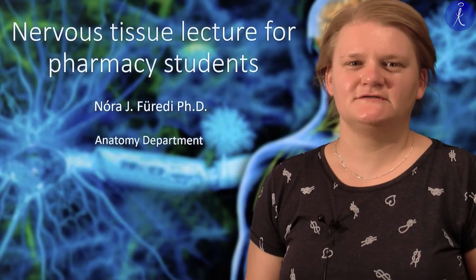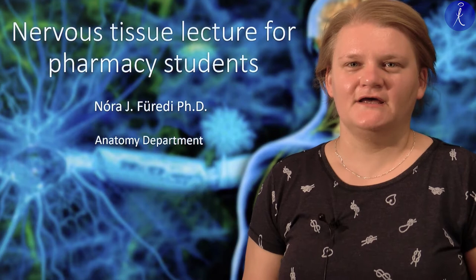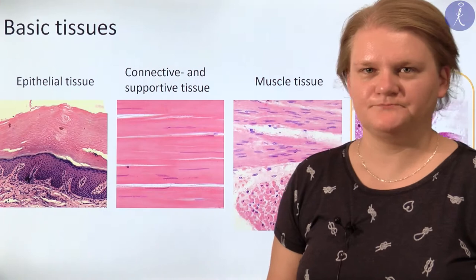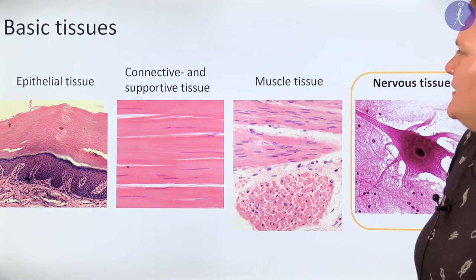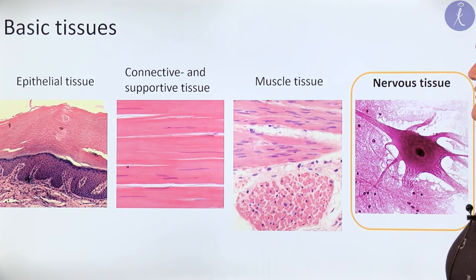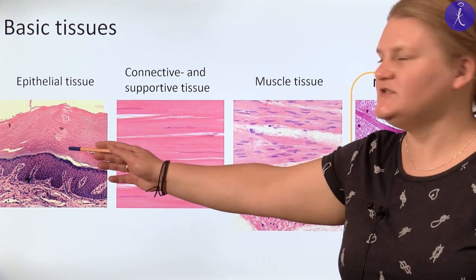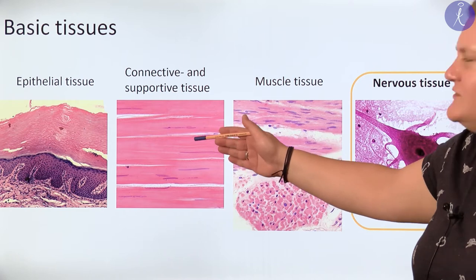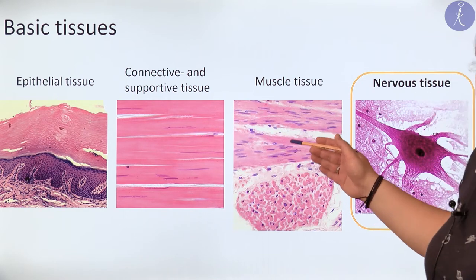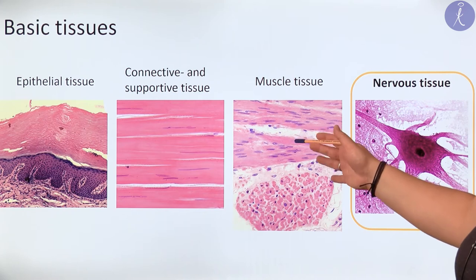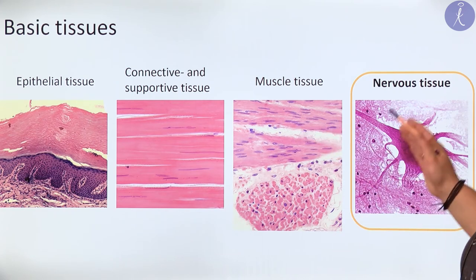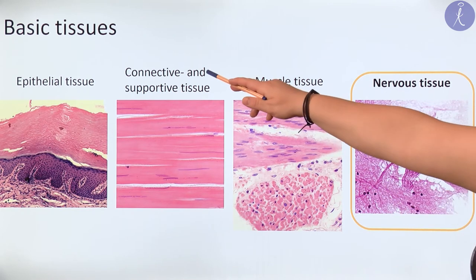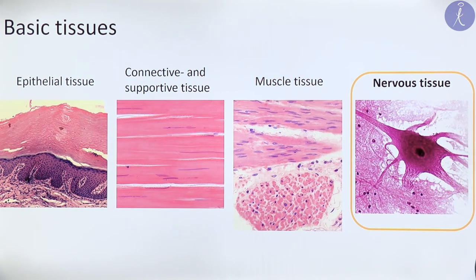Dear pharmacy students, my name is Nora Furedi and today I would like to talk about the nervous tissue. In the previous semester you already discussed the epithelial tissue, and you are also familiar with the connective and supportive tissue, and different types of muscle tissue. Today I would like to discuss the last type of basic tissue, which is the nervous tissue.